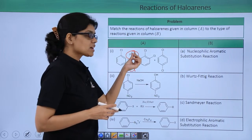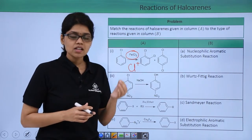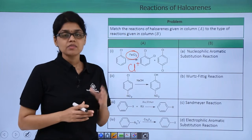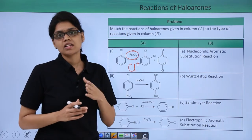As we can see, Fe reacts with Cl2 to give FeCl3 which further reacts with another molecule of chlorine to give FeCl4 minus and Cl plus.